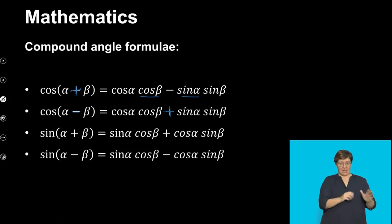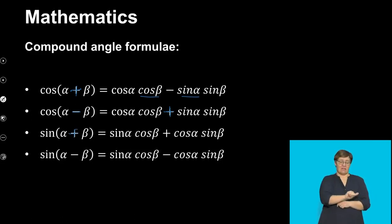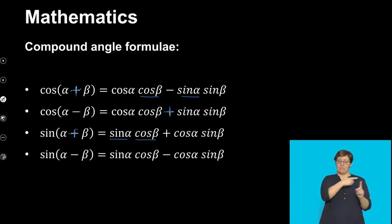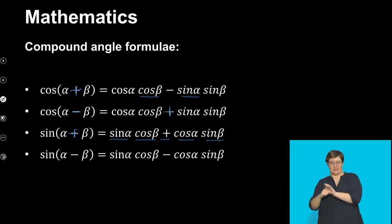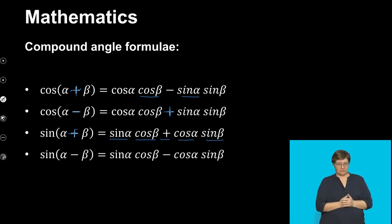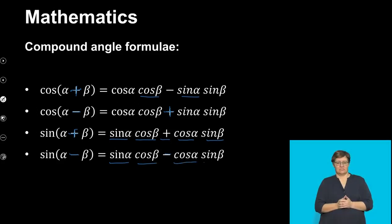For the sin compound angle formula, sin(α + β) becomes sin α cos β + cos α sin β. And the other version: if you have a negative here, you'll have a negative here. So sin(α − β) becomes sin α cos β − cos α sin β.